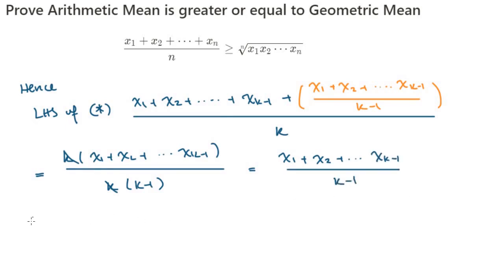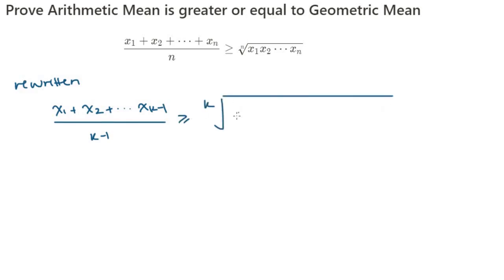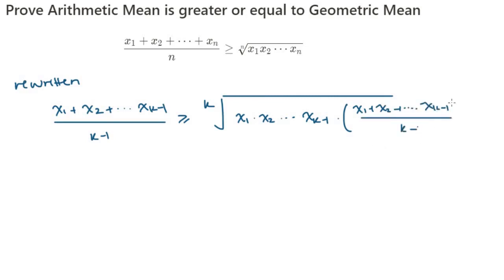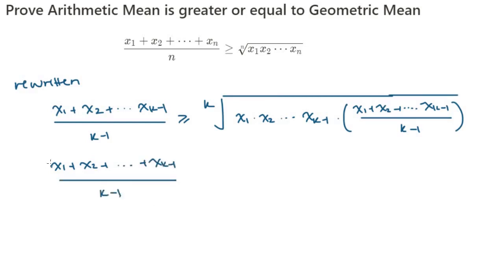So let's rewrite it and substitute x = (x₁ + x₂ + ⋯ + xₖ₋₁)/(k − 1) into the right-hand side as well, and raise both the left-hand side and right-hand side to the power of k.